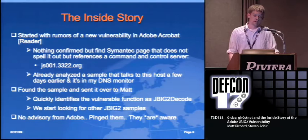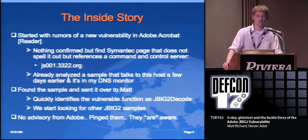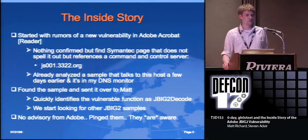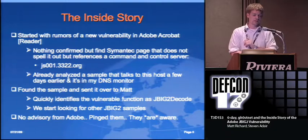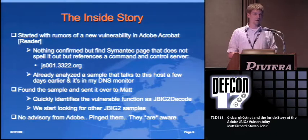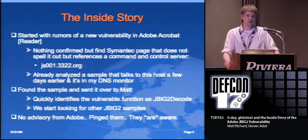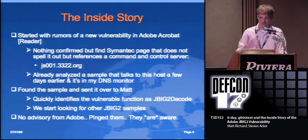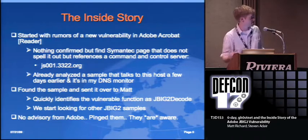The inside story - how did it all start? It kind of started with rumors. People mentioned a few things, some talk on lists, discussions about a new vulnerability. No one had any details - just talk of an Adobe vulnerability affecting multiple versions that was a zero-day, but really lacking any details on what was actually exploited. Someone pointed to a Symantec page with a write-up that mentioned JS001.3322.org, a hostname on a Chinese CN99 dynamic DNS provider frequently used by malware authors. It referenced a PDF but didn't say it was a zero-day.